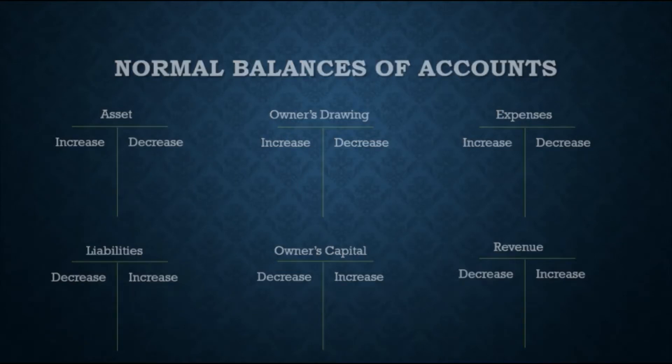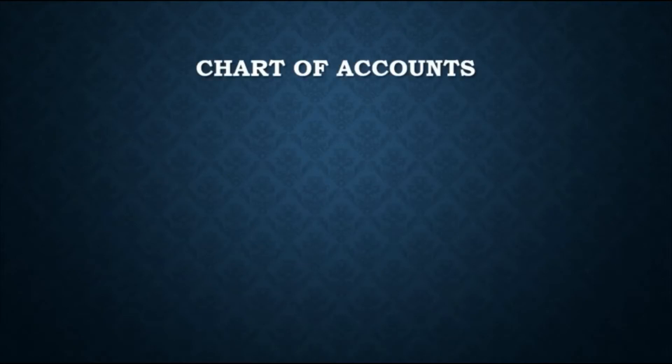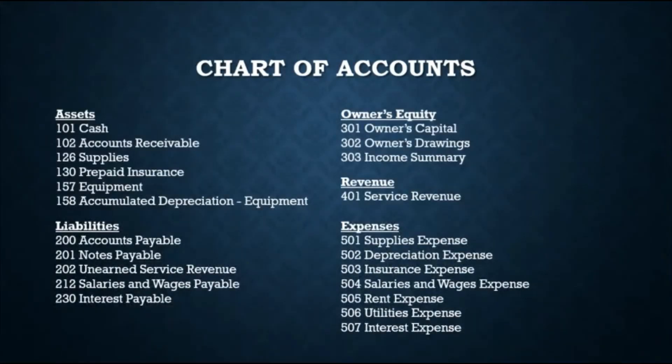The number and type of accounts may differ across companies depending on the owner's preference. For example, an owner may want a single account for all utility expenses, while others may separate expense accounts for each type such as gas, electricity, and water. To guide companies on which accounts to use in journalizing and posting, they create a chart of accounts — which lists the accounts and their account numbers to identify their location in the ledger. Usually, the numbering system starts with balance sheet accounts followed by income statement accounts.